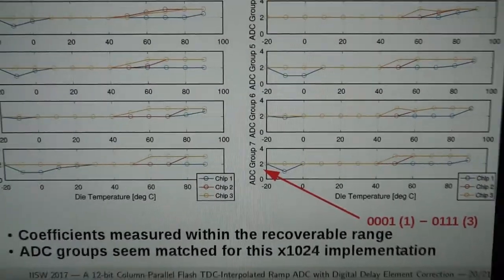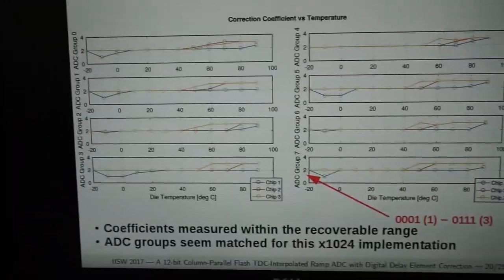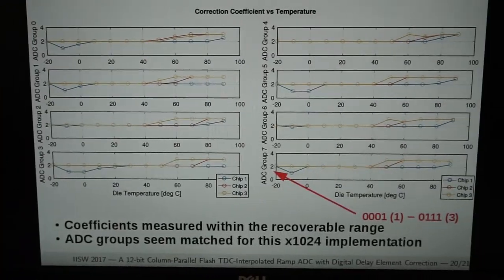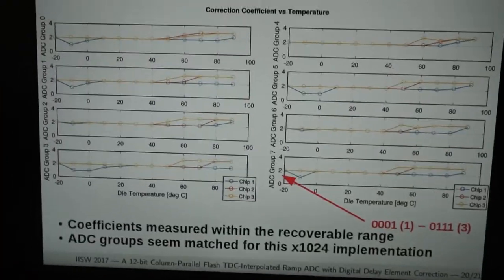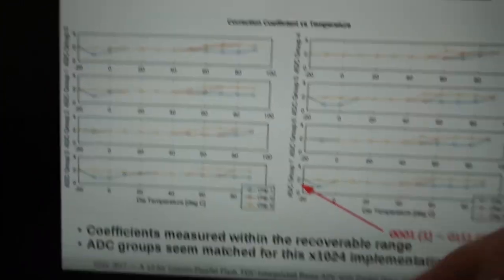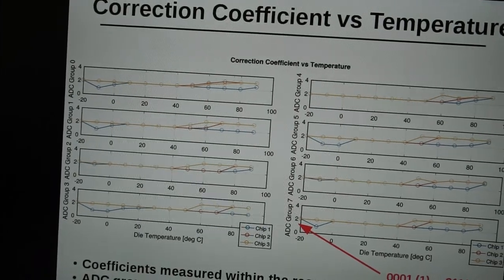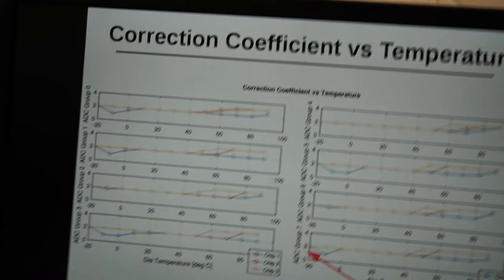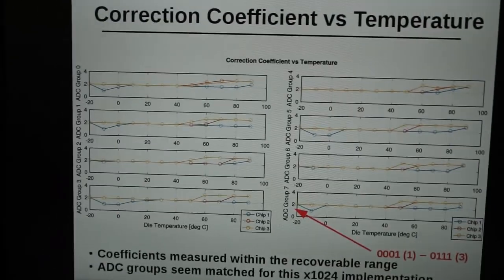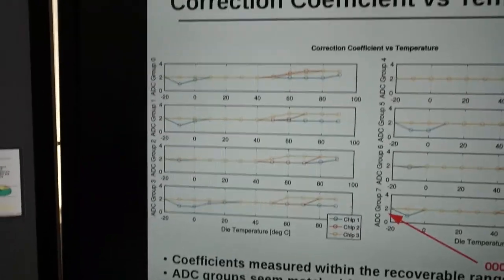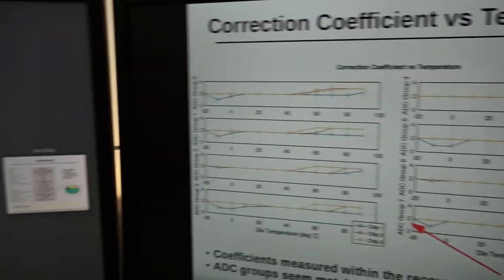To summarize, the correction coefficient is measured to be within the recoverable range. Even if there is a mismatch between one ADC group and another, this does lead to some different DNL response, but it is less than 0.5 LSB, of course if we exclude the design error that I did and the glitch of the 16th digit. Here are the correction coefficients captured.